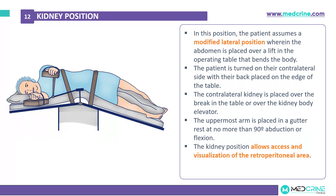In kidney position, the patient assumes a modified lateral position whereby the abdomen is placed over a lift in the operating table, bending the body. The patient lies on their contralateral side with the back placed on the edge of the table, and the contralateral kidney is placed over the break in the table or the kidney bridge elevator. The uppermost arm is placed in an arm rest at no more than 90 degrees of abduction or flexion. The kidney position allows access and visualization of the retroperitoneal areas.